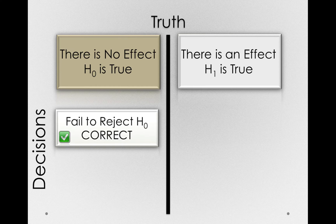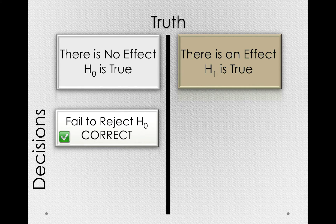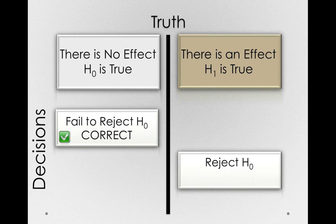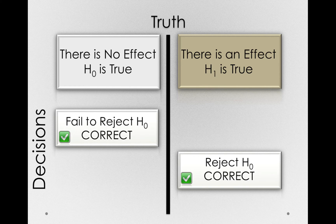It's correct because there is a correspondence between our decision and what is true in the world — we fail to reject the null, and this is a world where the null is true. On the other hand, if we're in a world where there really is some effect, that is H1 is literally true, and we reject the null hypothesis, that's also a correct decision. We hope we would do that if we're in a world where H1 is actually true. These are correct decisions because there is a correspondence between what we say is true about the world and what is actually true about the world.